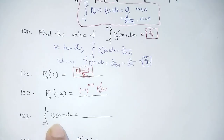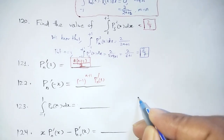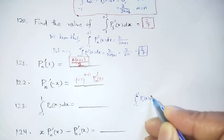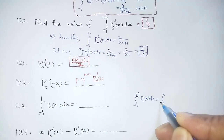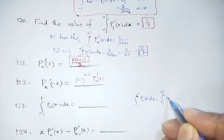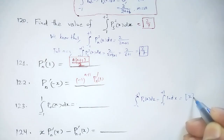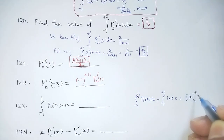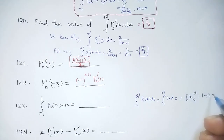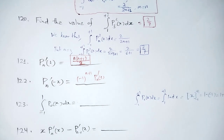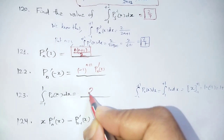Next question: integration from -1 to +1 of P0(x) dx. Since P0(x) = 1, this becomes the integral of 1 dx from -1 to +1, which equals x evaluated from -1 to +1. Upper limit minus lower limit: (1) - (-1) = 2. The answer is 2.